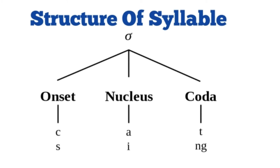These words are 'cat' and 'sing.' In 'cat,' the letter C is a consonant, so it is the onset. The letter A is a vowel, so it is the nucleus. And the letter T is a consonant, so it is the coda.